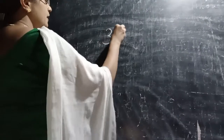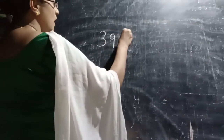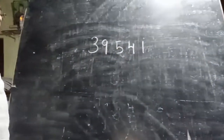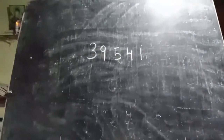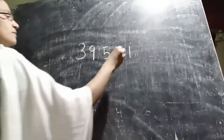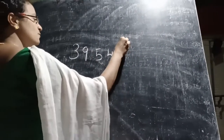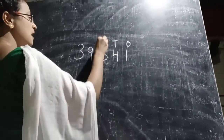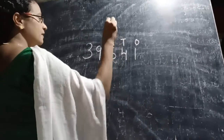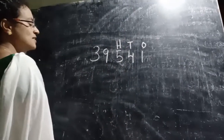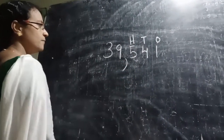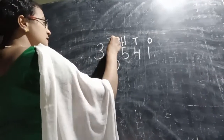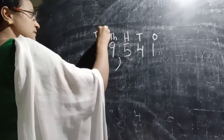Let's take another question with the digits: three, nine, five, four, one. Starting from the right, the first three places form the ones period — ones, tens, hundreds. After the ones period, place a comma. Then the thousands and ten-thousands places follow.